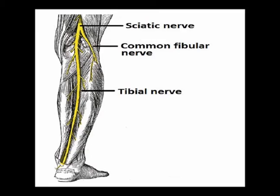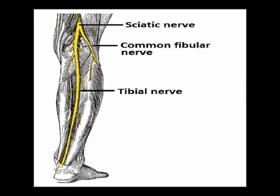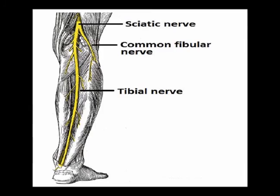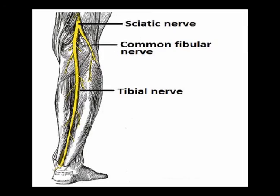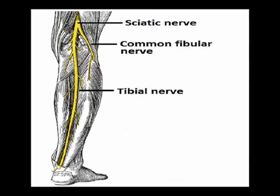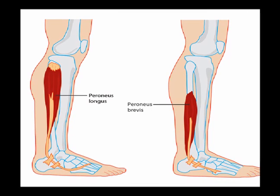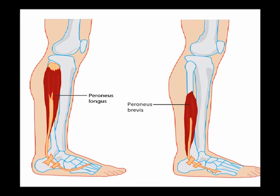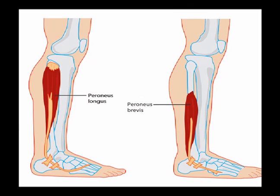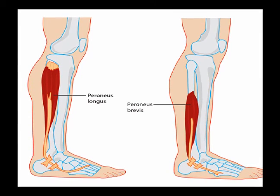So again, the superficial peroneal nerve is also known as the superficial fibular nerve, and it arises from the common peroneal nerve. It supplies motor innervation to the peroneus longus and the peroneus brevis, which are mainly responsible for ankle eversion.